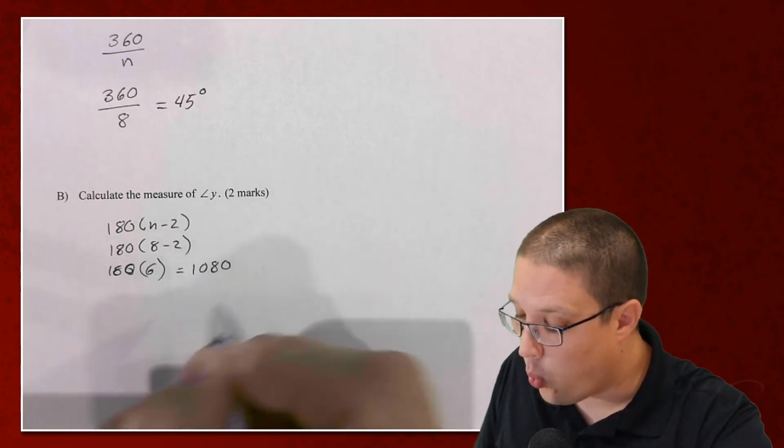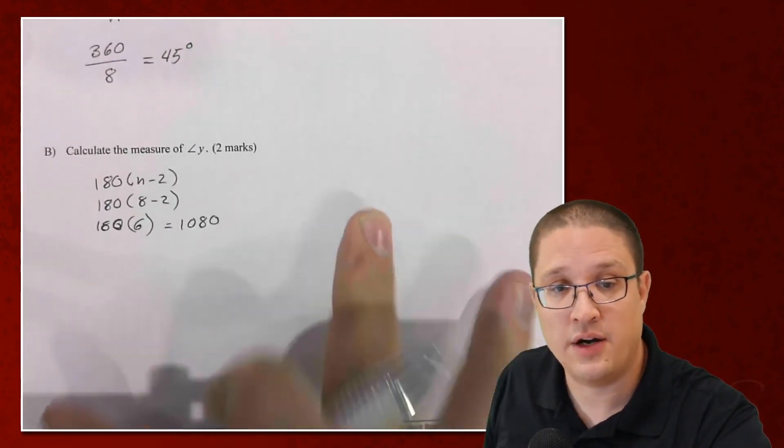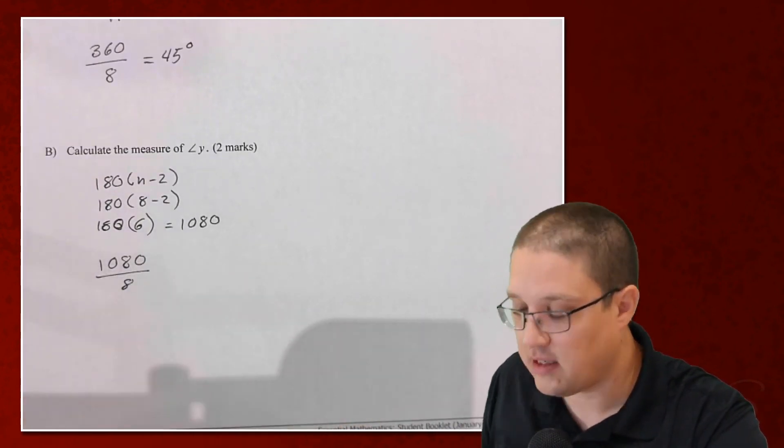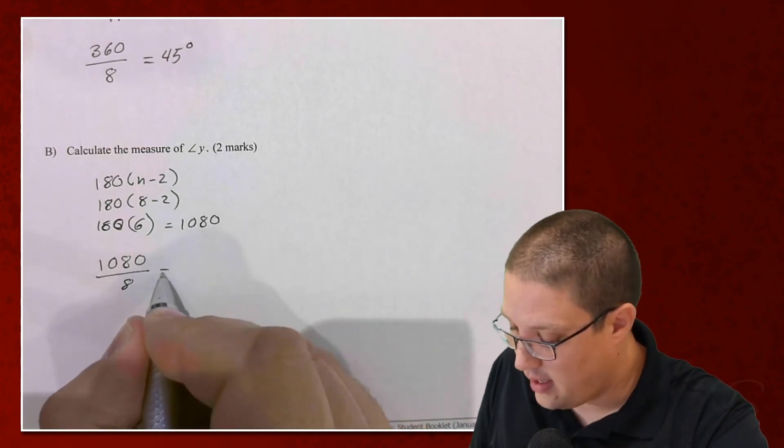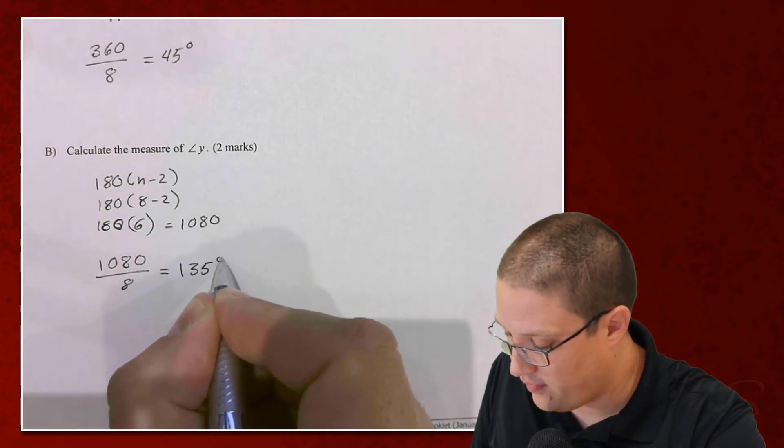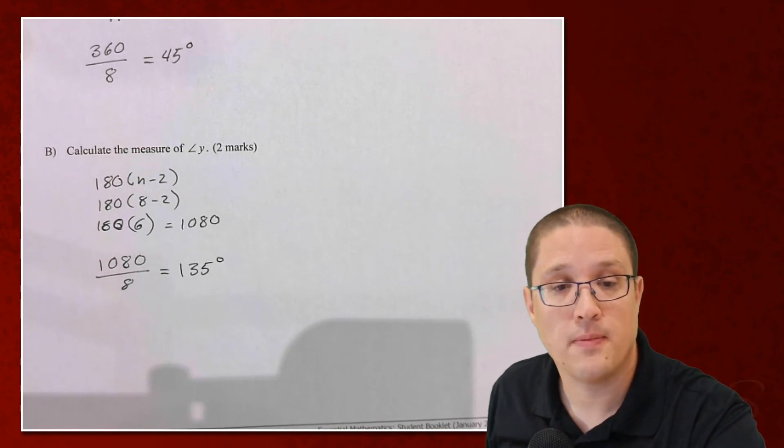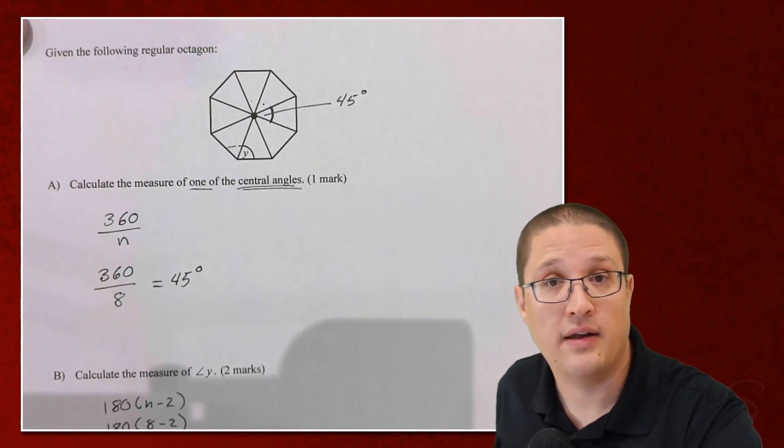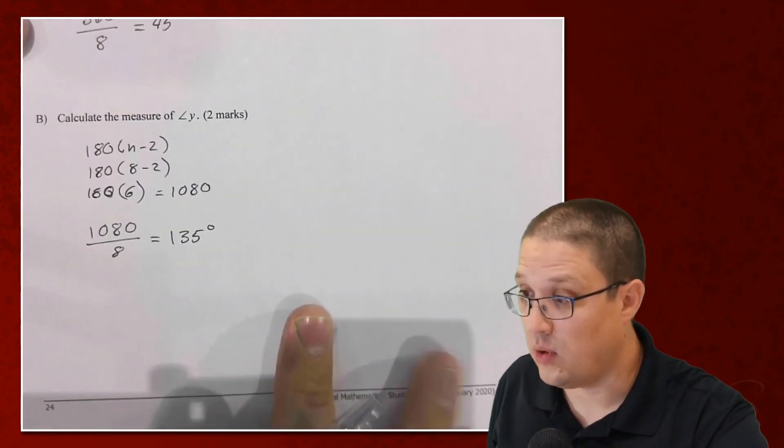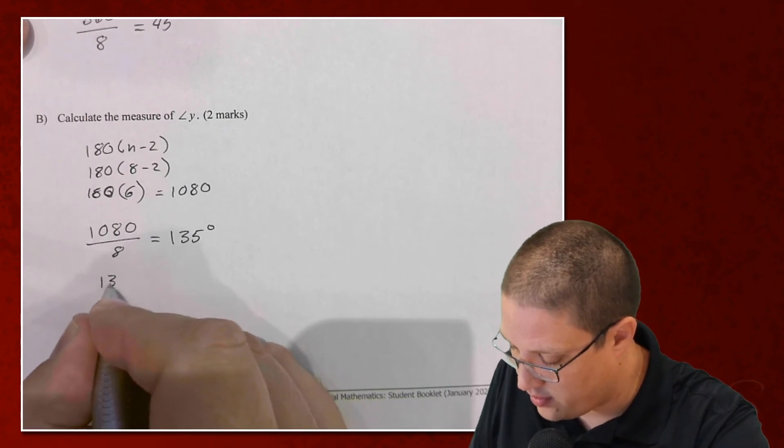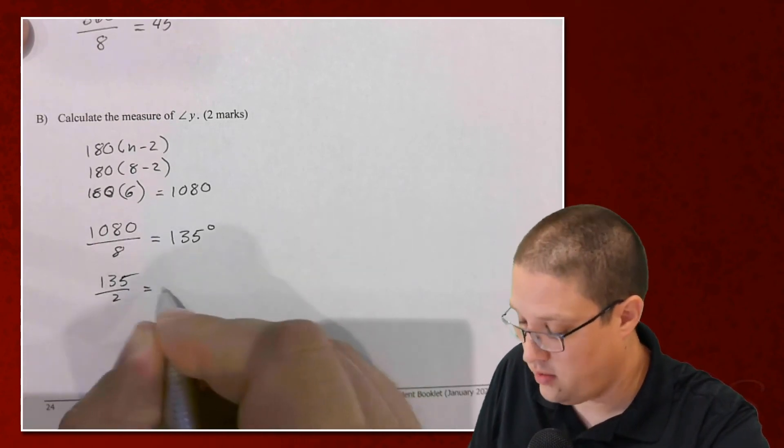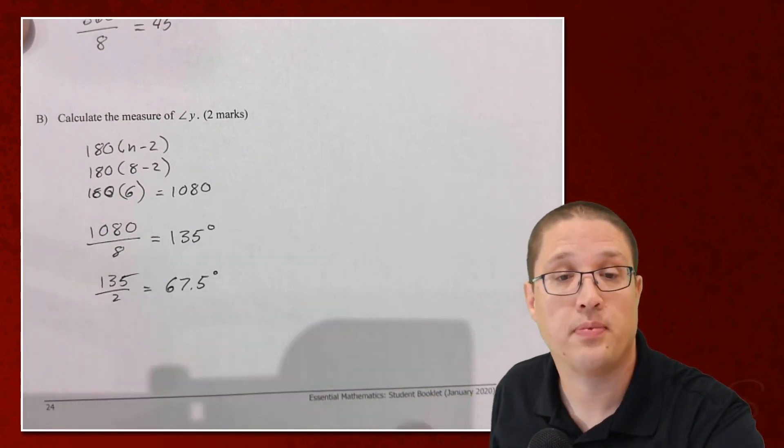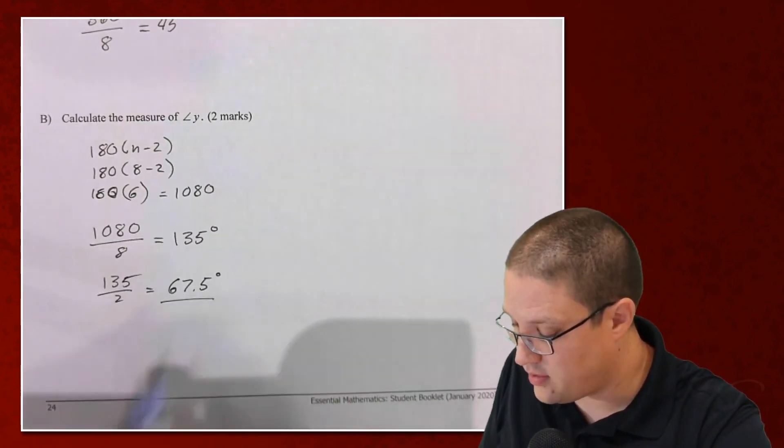I need to find one of these interior angles. So I'm going to take that 1080 divided by 8, because I know there's 8 of them. And that gets me 135 degrees. That's the whole interior angle. I need half of that to find angle Y. So I can cut that in half, 135 divided by 2, and I get 67.5 degrees. There's one way to solve this.